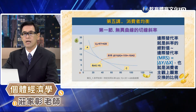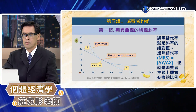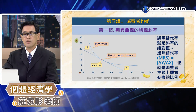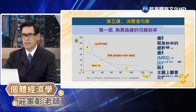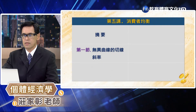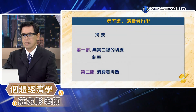這就是無差異曲線的切線斜率，無差異曲線的切線斜率可以把它想成是消費者主觀上 x 商品跟 y 商品的替換率，跟市場客觀的價值是兩個不同的概念。接下來我們來看第二節消費者均衡。